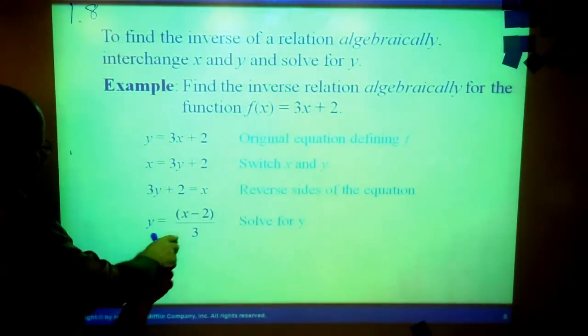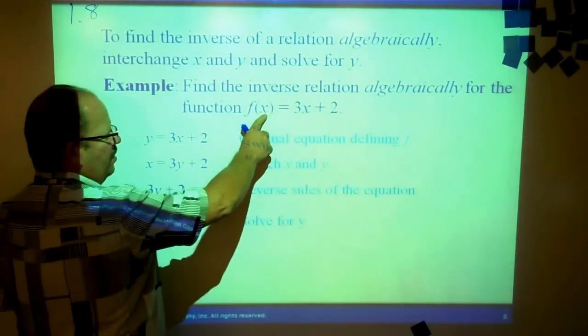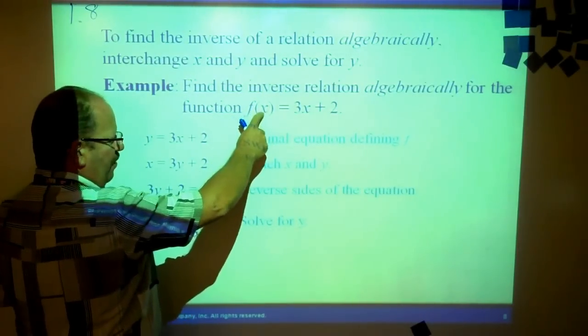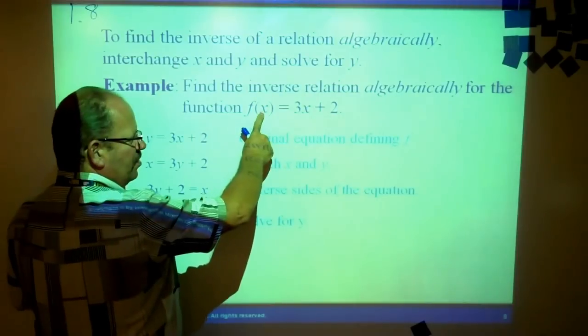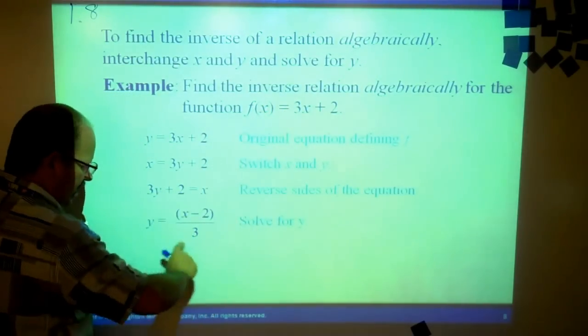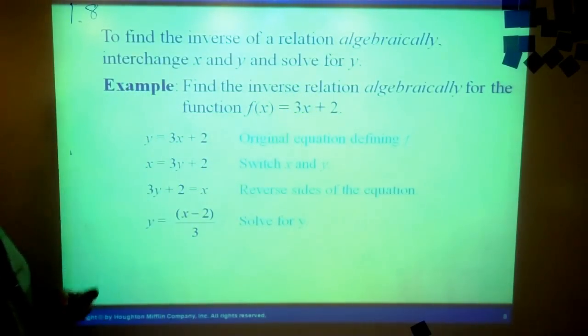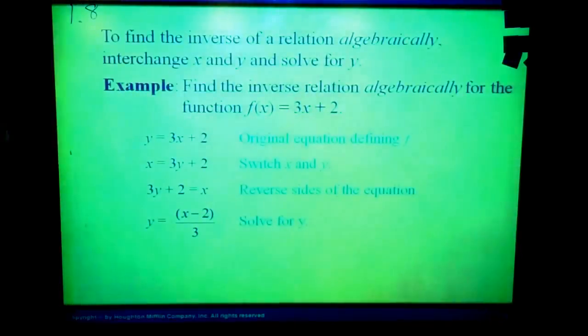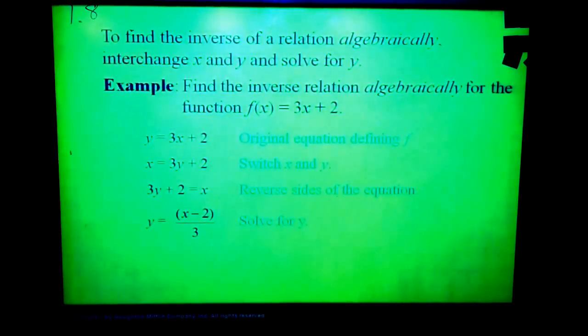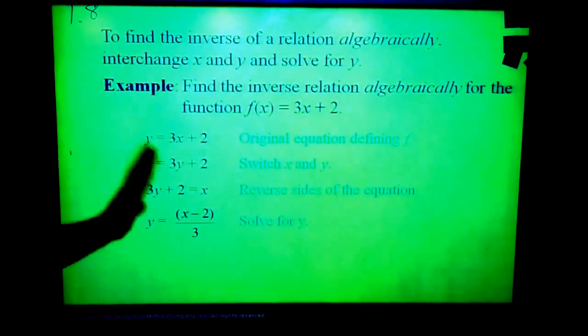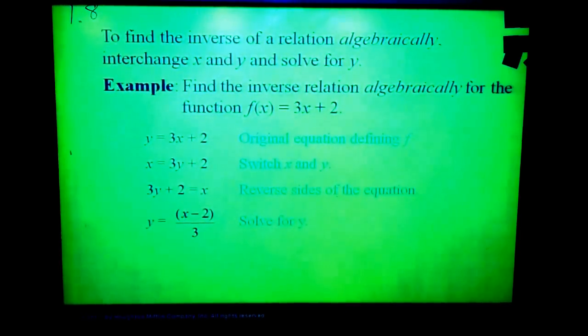And what would happen if we put the inverse function into here? If we took f of its own inverse, it would be 3 times this x minus 2 over 3, and we would see that the answer is always x. If we take f of f inverse, the answer will always just be x.